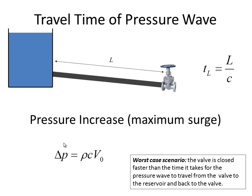The maximum pressure that could occur is related to the velocity of the water, the celerity of the pressure wave, and the density of the fluid. The worst case scenario is when the valve is closed faster than the travel time — that's when the maximum pressure, the maximum surge, will occur. If you close it slowly enough that the wave can make the round trip before the valve is closed, you'll still have a pressure increase, but it won't be this maximum.